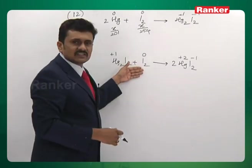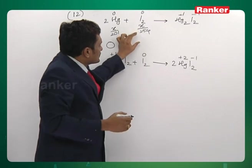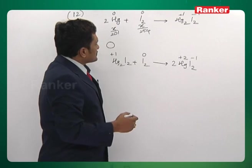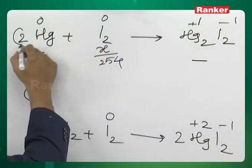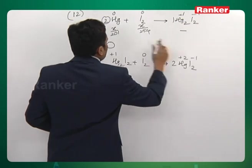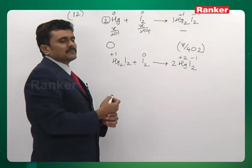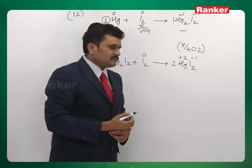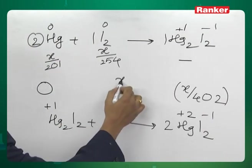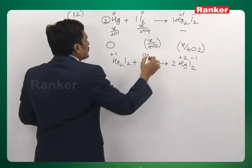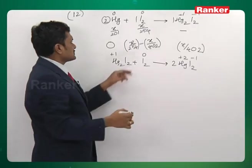For every 2 moles of mercury, 1 mole of mercurous iodide is obtained. So for x/201 moles of mercury, x/402 moles of mercurous iodide are formed. For every 2 moles of Hg reacting, 1 mole of I₂ reacts, so x/402 moles of I₂ will react. The moles of I₂ remaining are initial moles x/254 minus x/402 that have reacted. These amounts are ready for the second reaction.